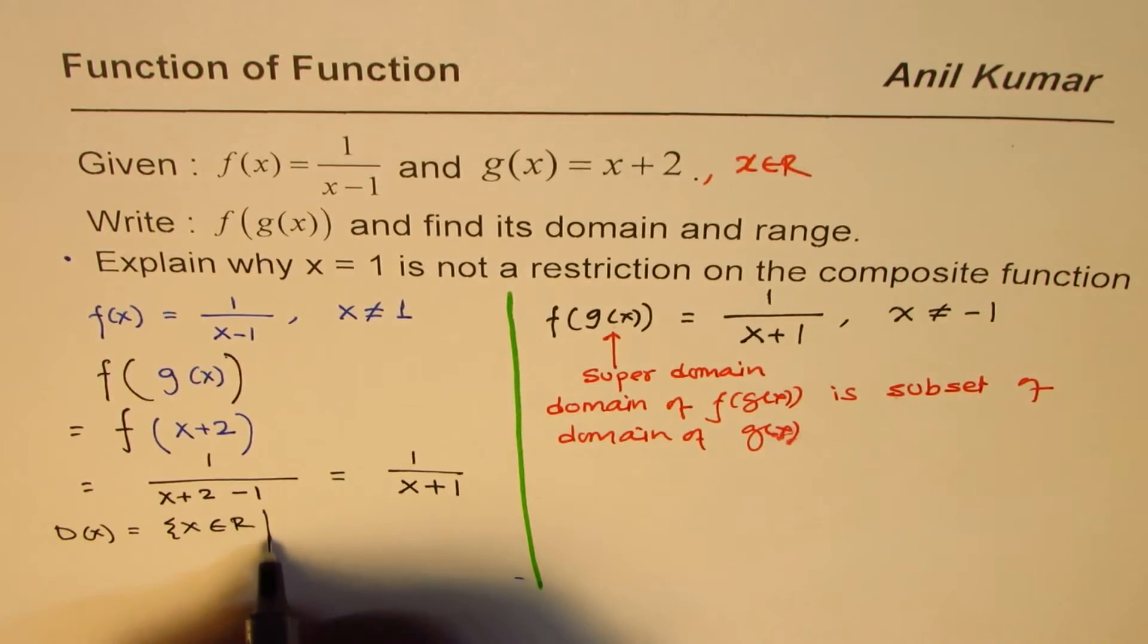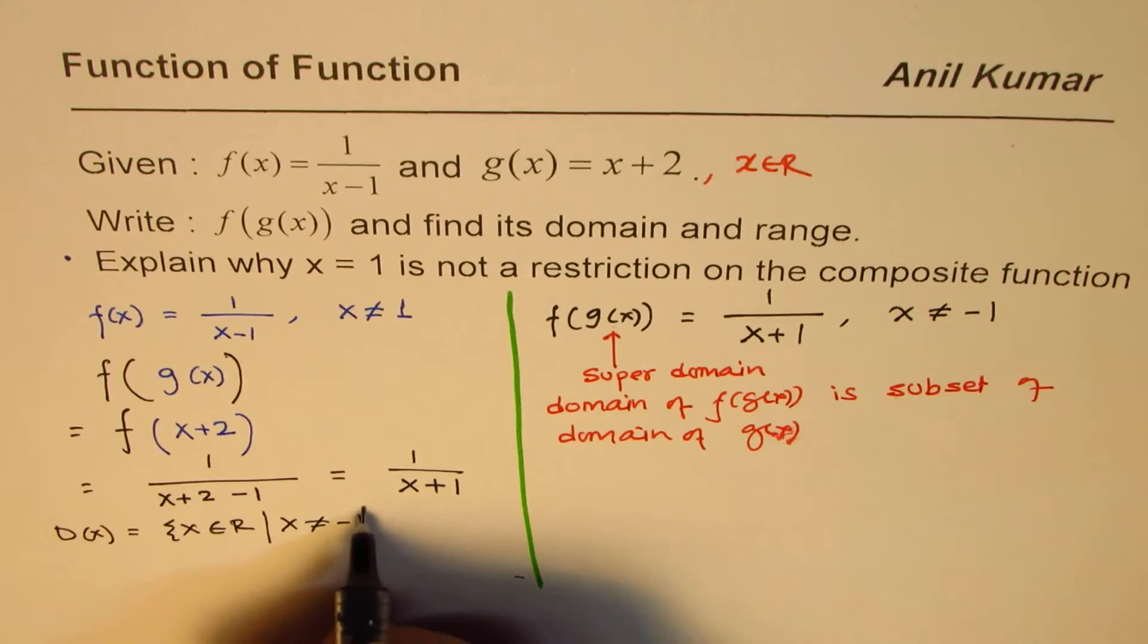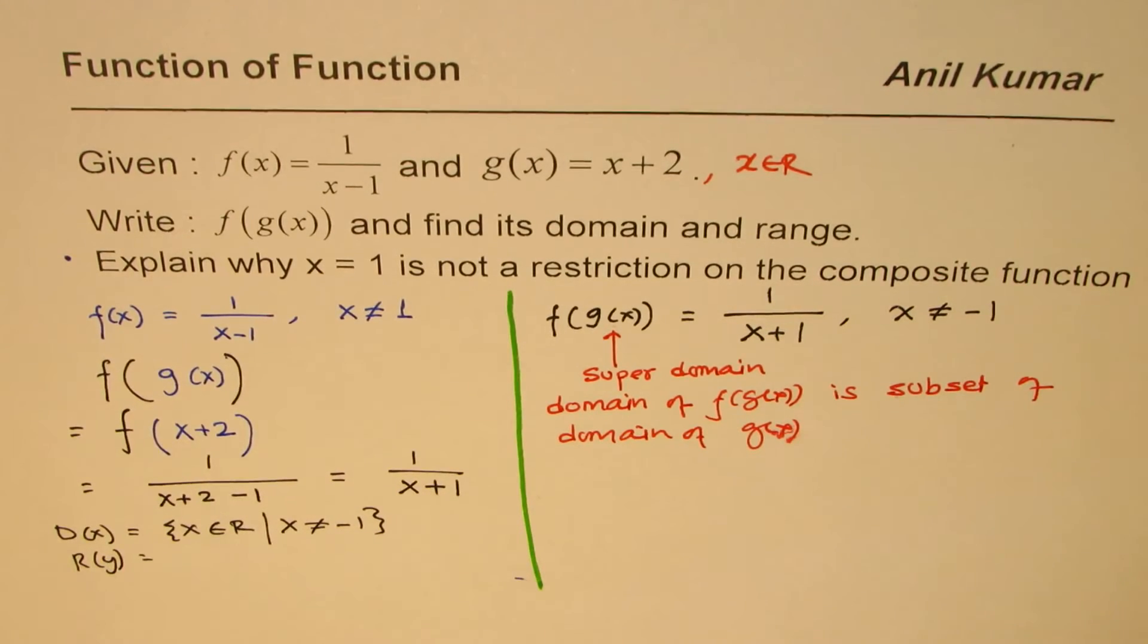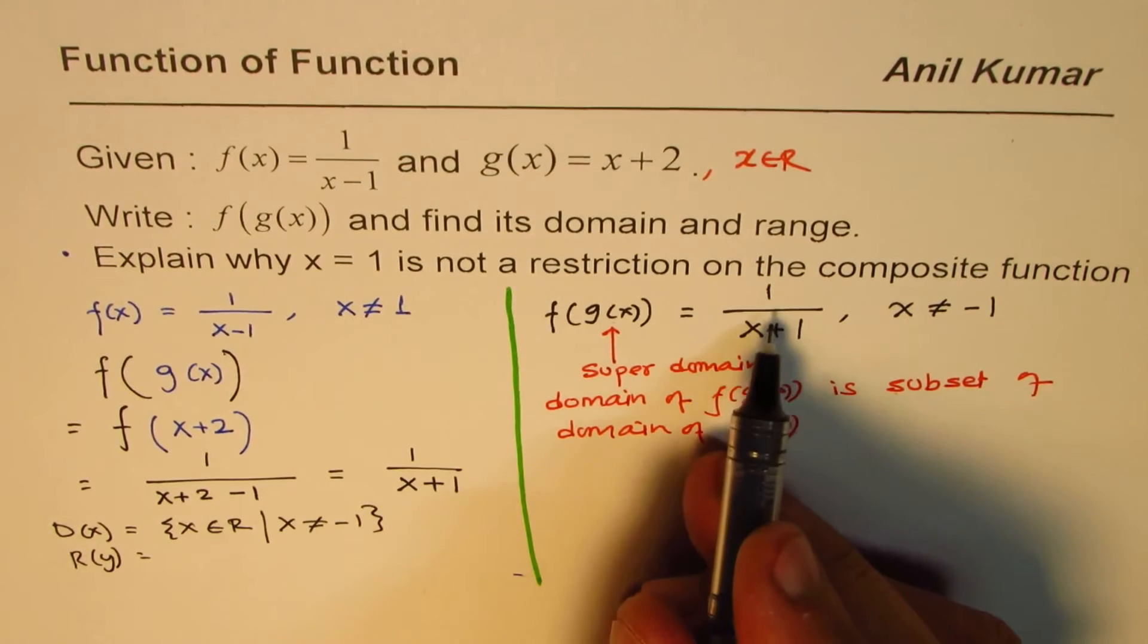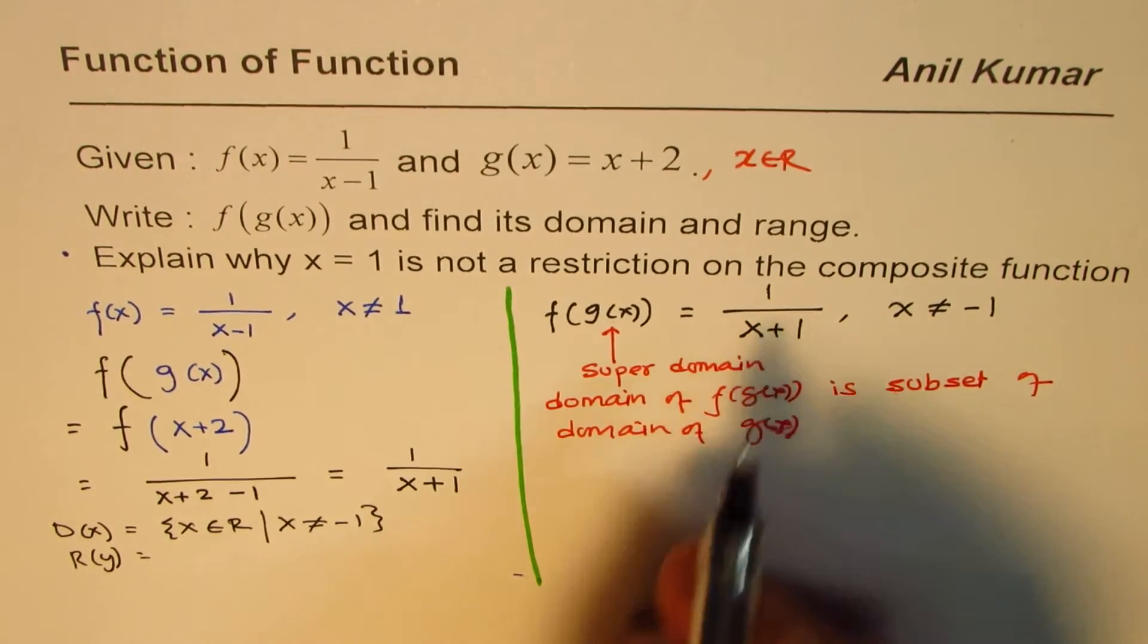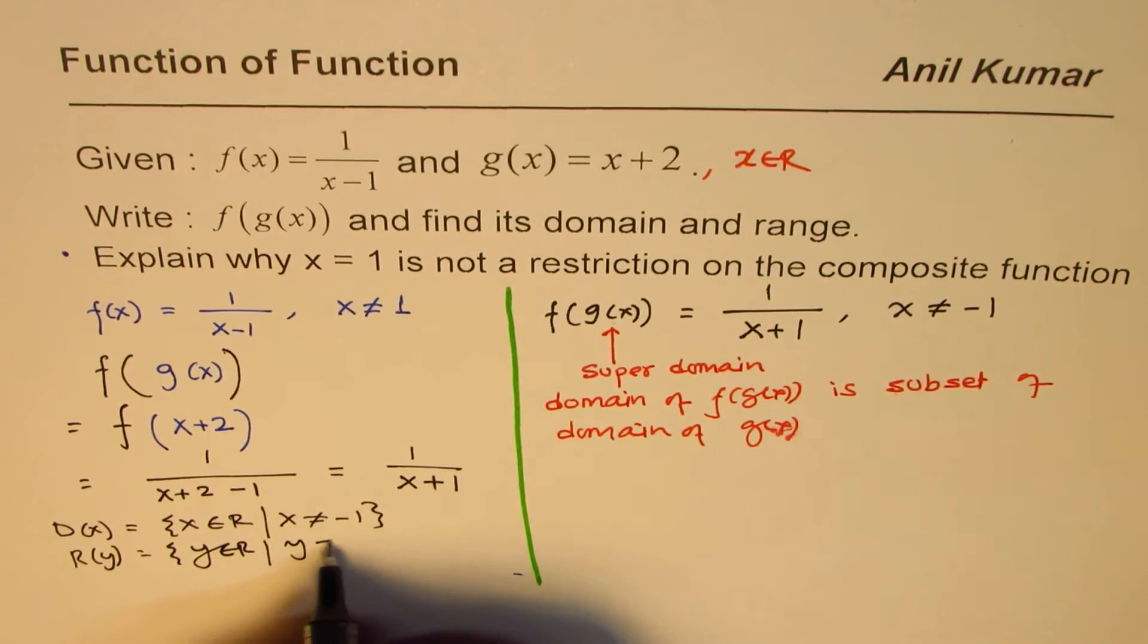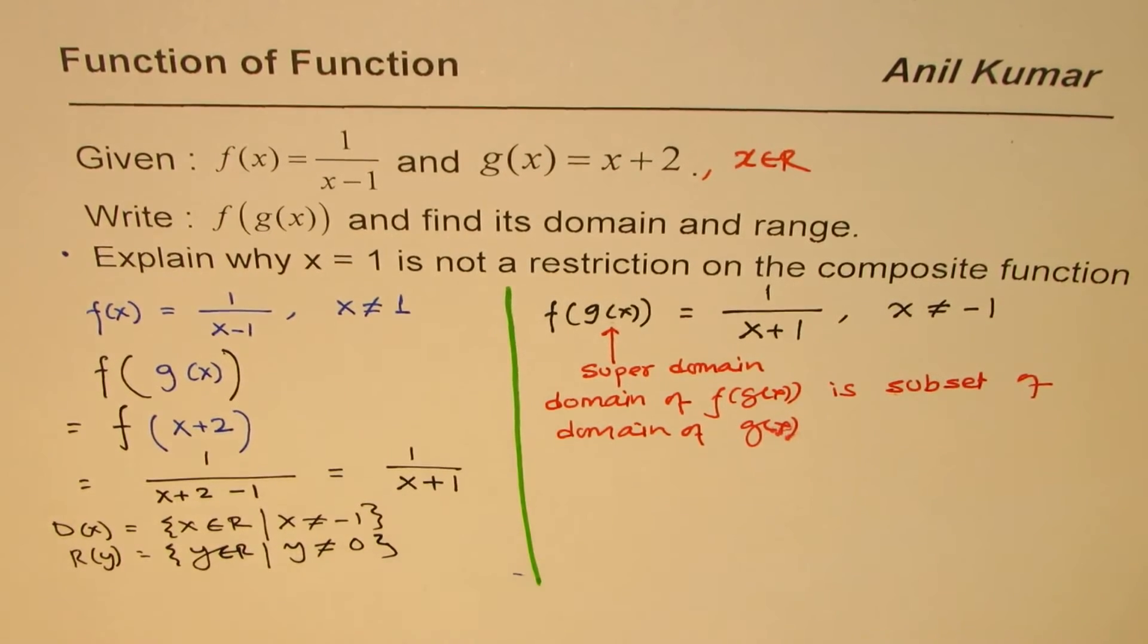x belongs to real numbers where x is not equal to -1. What is the range? This is a reciprocal function 1/(x+1). It will approach 0 but will never be at 0. We say range: y belongs to real numbers where y is not equal to 0.